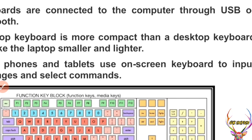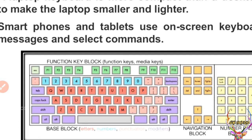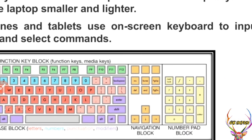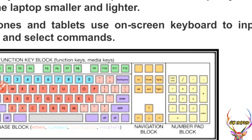Look at this picture closely. The green color keys are function keys — it starts from F1 to F12, so totally 12 keys are there. The number keys are 1 to 0, and the red color will be the alphabetical keys. The control keys are violet — that purple color is control keys. This orange color is the navigation block, and the yellow color is the keypad.